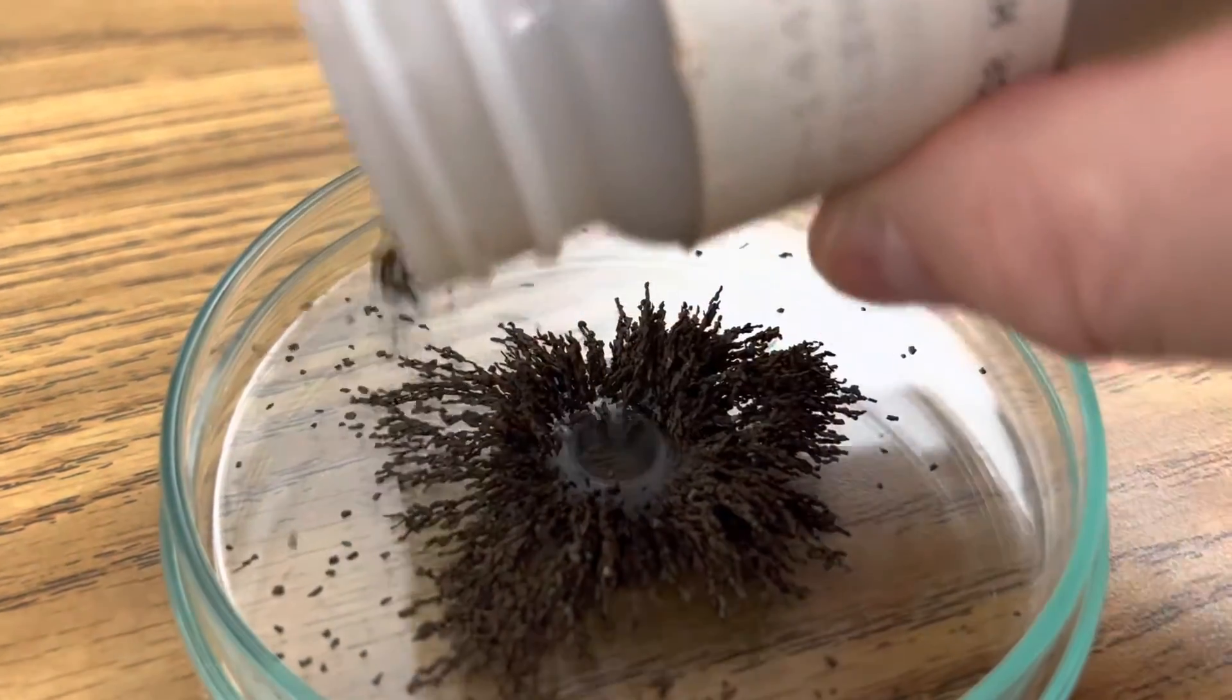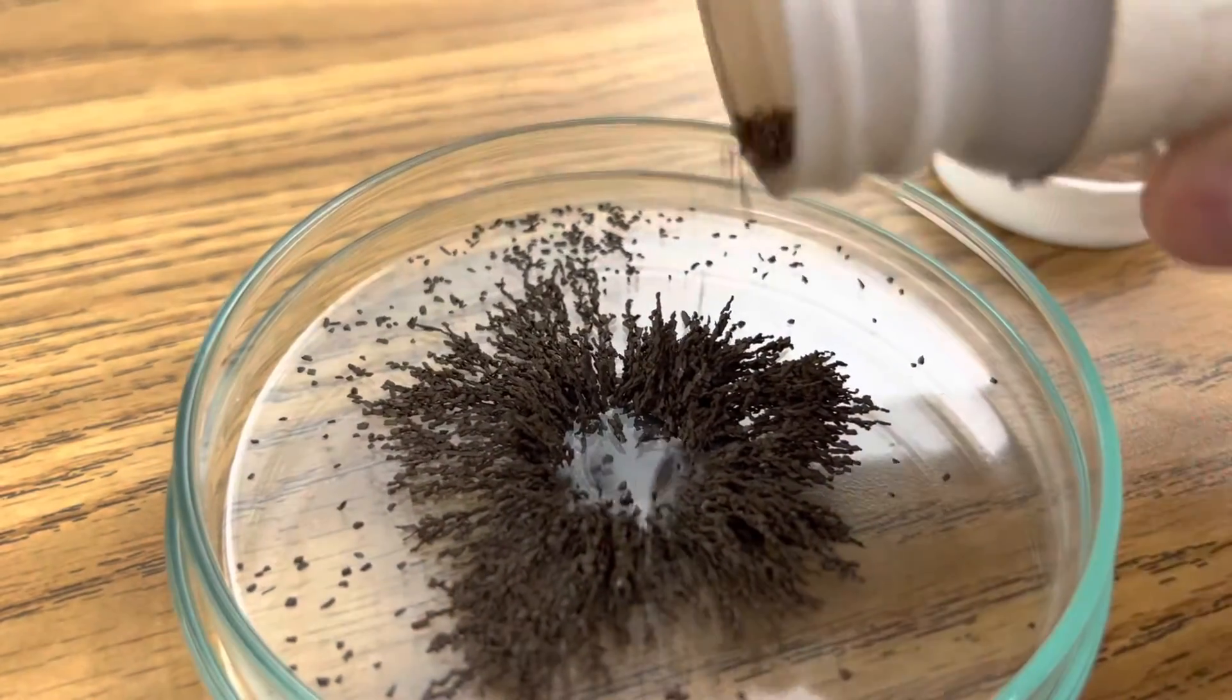You see the iron filings moving away from the center of the magnet. Well I hope you enjoyed today's edition of Ramseyland and I'll see you next time.